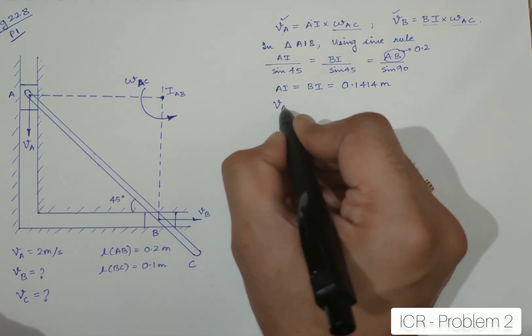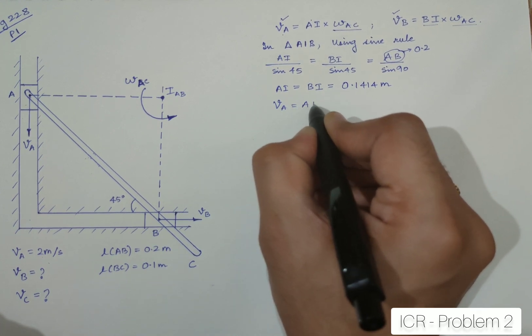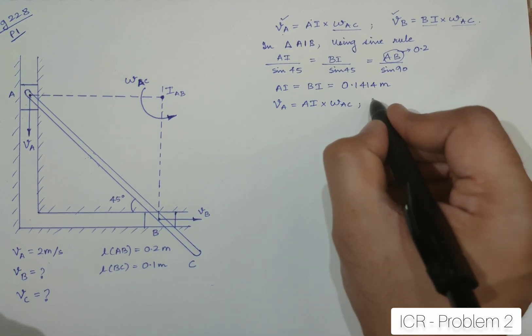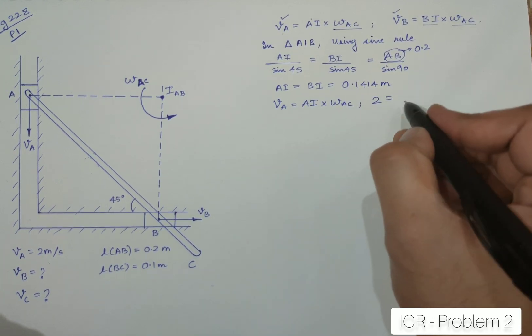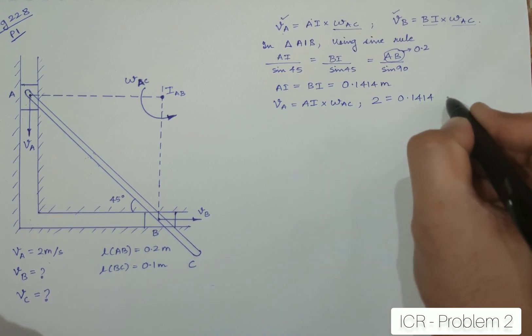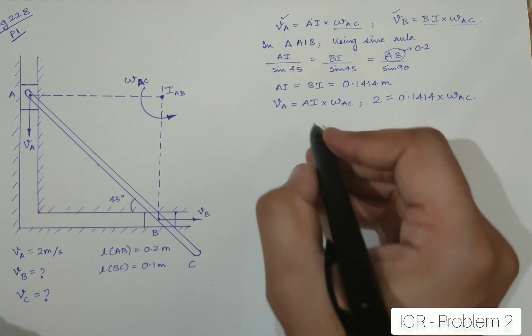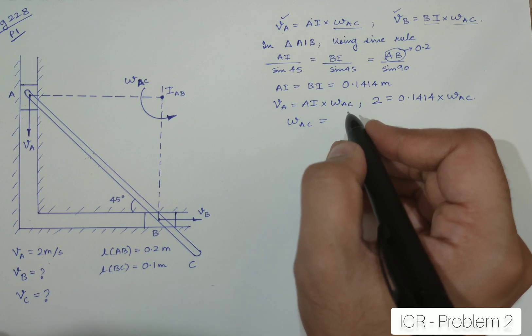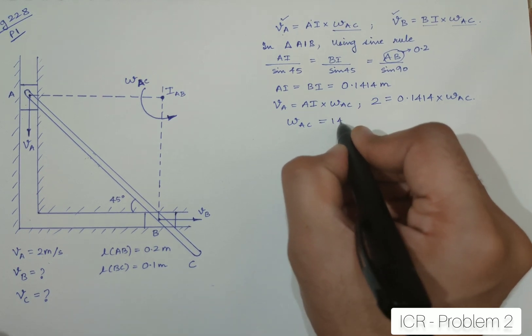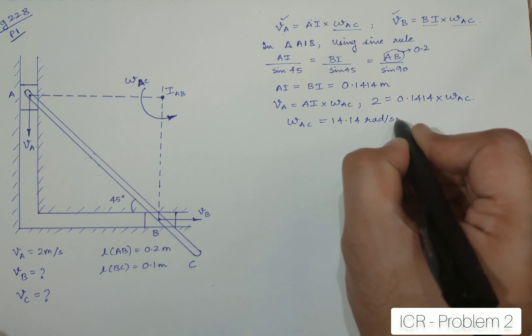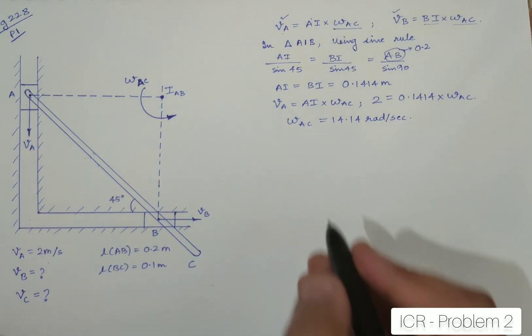So, now once I get this, I will resubstitute this in our actual statement that we have written earlier. So, I can rewrite that as VA is equal to AI into omega AC. So, here I can say 2 is equal to 0.1414 into omega AC. So, from here I can find out omega AC which will be equal to 14.14 radians per second.